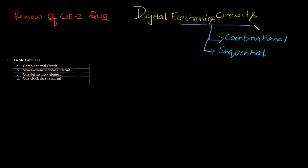Combinational circuits are those circuits where the output always depends only on the present input. Whereas in the sequential circuit, the output does not always depend only on the input but also depends on the past outputs. So that is what we know.